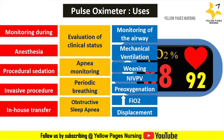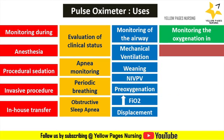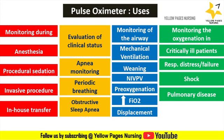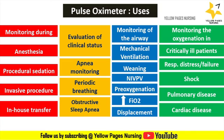Pulse oximeter is helpful in monitoring oxygenation in unstable or critically ill patients, such as those with hypotension, shock, respiratory disease or failure, and cardiopulmonary arrest. It monitors patients with potential for hypoxia, apnea, respiratory distress or failure, and shock. It also plays a vital role in monitoring patients with pulmonary disease — asthma, COPD, bronchiolitis, reactive airway disease, pneumonia, or airway obstruction — and cardiac disease such as heart failure, cyanotic congenital heart disease, acute coronary syndrome, or cardiomyopathy.